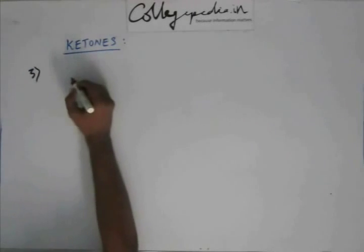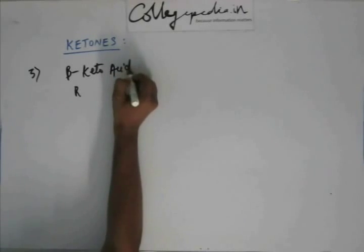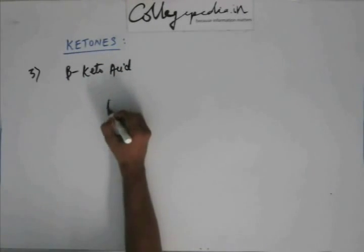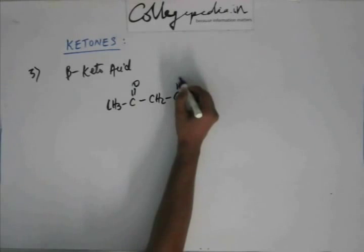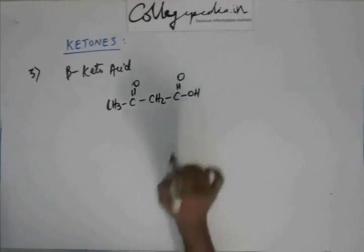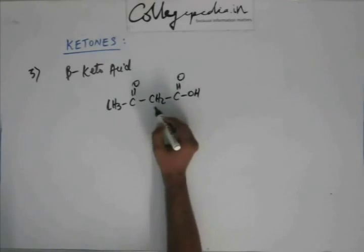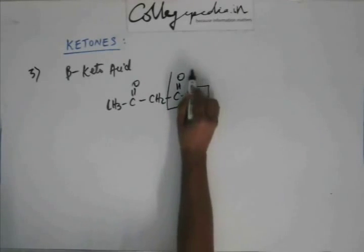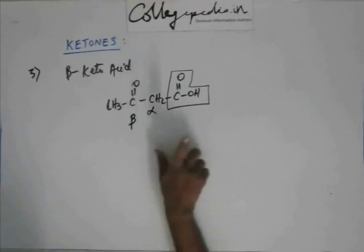Reaction number three, very important, very interesting. If we have a beta-keto-acid, for example, this is an acid because there is a carboxylic acid group and at the beta position the carbon with which this whole acidic group is attached, that is the alpha carbon. The next carbon is the beta carbon. At the beta position there is a ketonic group. So this is beta-keto-acid.